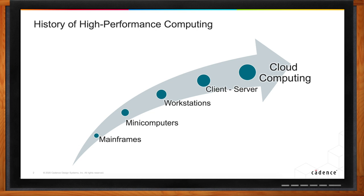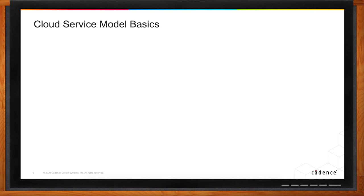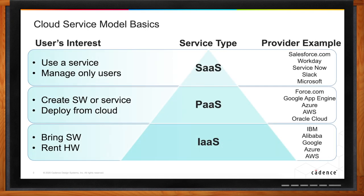The kind of cloud service you need depends on your design needs. The terminology can actually become a barrier to understanding. A simple diagram showing the different cloud service models is really helpful. Think of it like a pyramid — as you move further up, you're taking advantage of services implemented at a lower level. At the base is Infrastructure as a Service, the foundation of cloud, where the user brings their own software and rents the hardware from the cloud provider. Examples include AWS, Azure, Google, Alibaba, IBM, and Oracle.